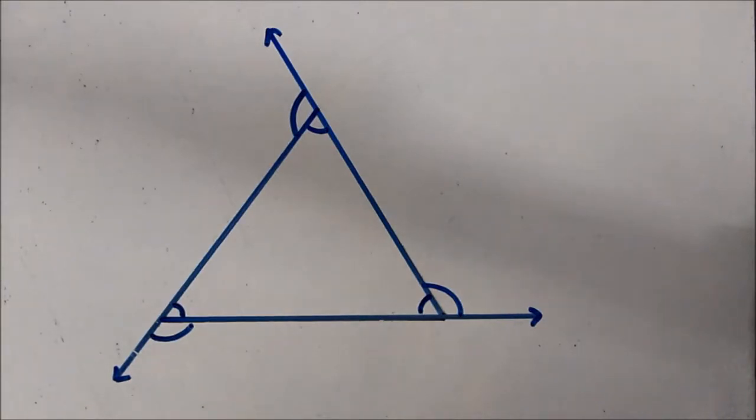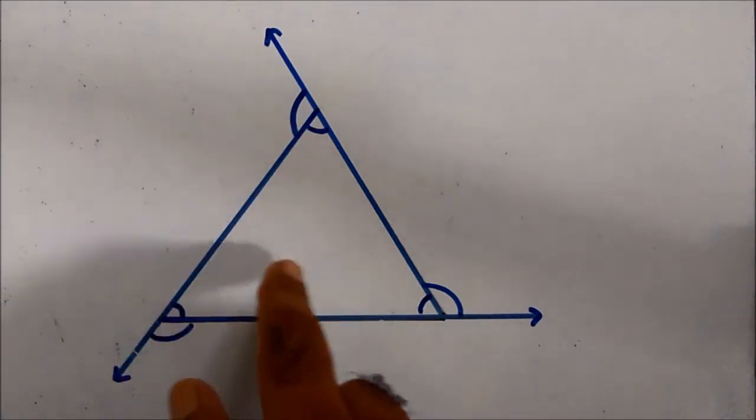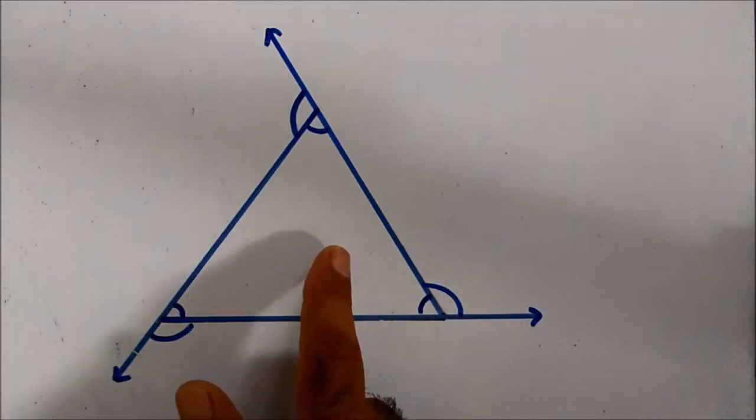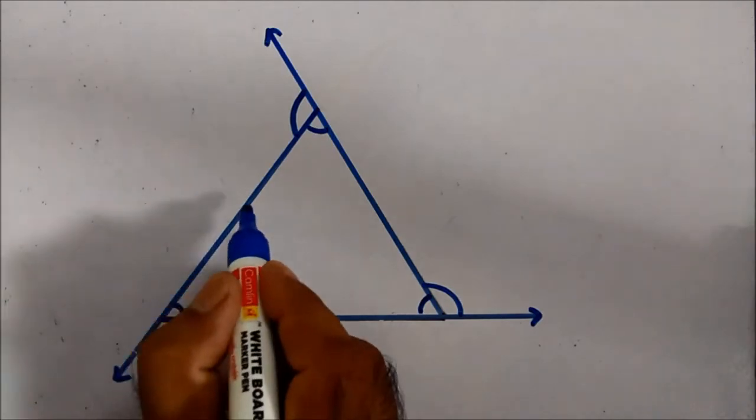Some of the measures of the exterior angles of a polygon. Students, we have the very first regular polygon, that is the equilateral triangle.